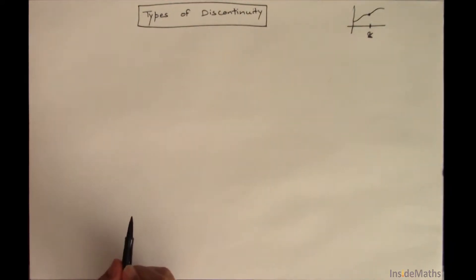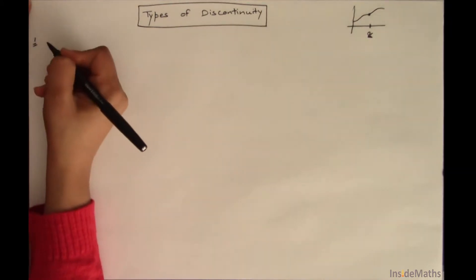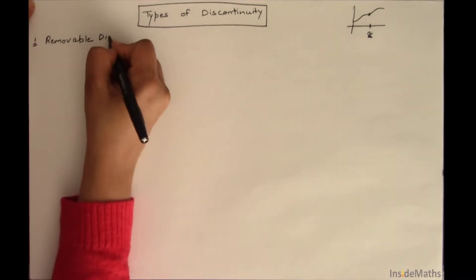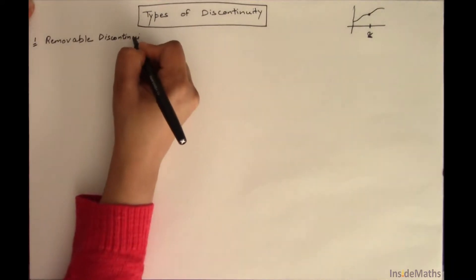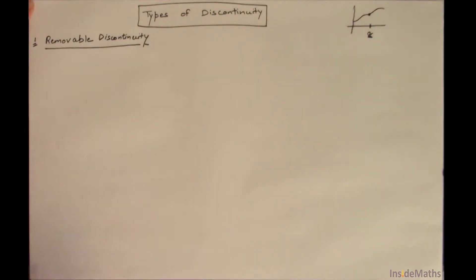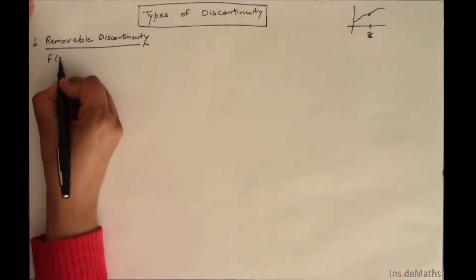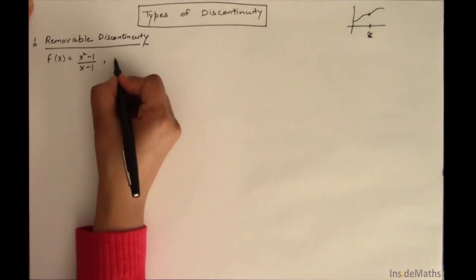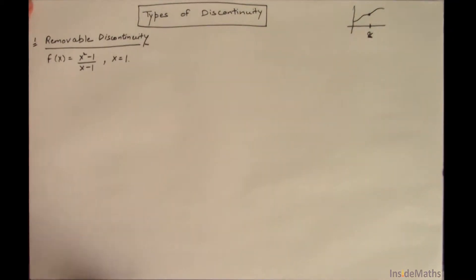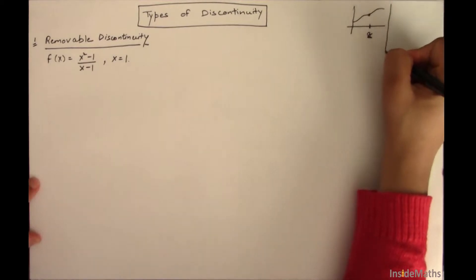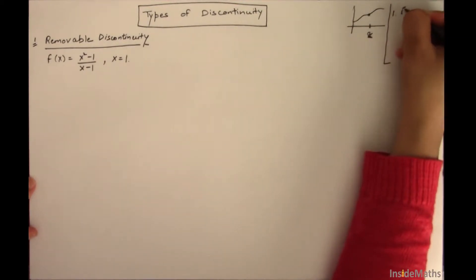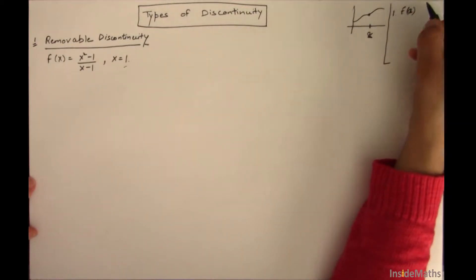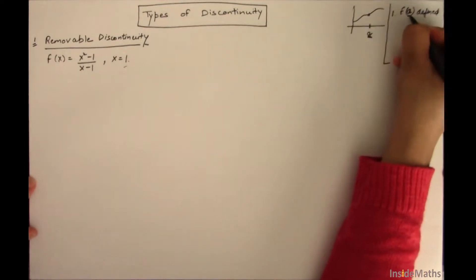Now there are different types of discontinuities, and the first one is removable discontinuity. For that, I'll define the function f(x) = (x² - 1) / (x - 1), and we have to check the continuity of this function at the point 1. To check continuity, we have to check two conditions. The first one is that the function must be defined at the point A where we have to check the discontinuity.